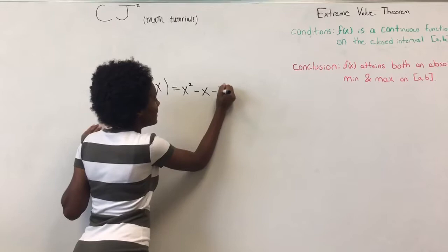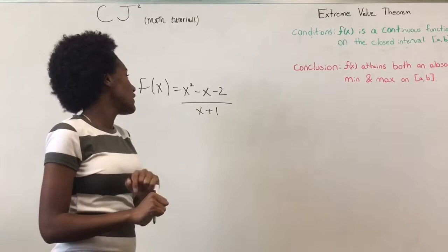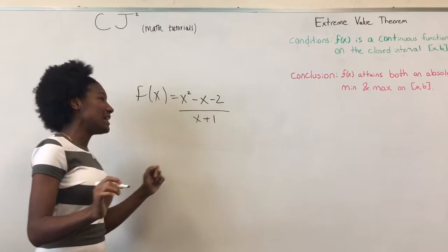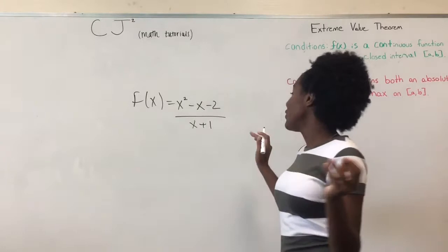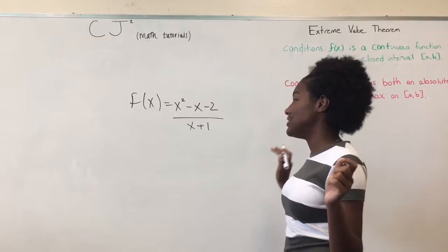There's a couple reasons why this function is discontinuous including that there's a hole at X equals negative 1. A hole in the graph would make the rational function both—in the rational function both the numerator and denominator equal to 0.